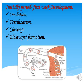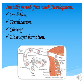At ovulation, the oocyte is picked up into the uterine tube with the help of the fimbriae — finger-like projections located at the lateral end of the uterine tube. Inside the uterine tube there is a wider area called the ampulla, and it is through this ampulla that fertilization occurs.